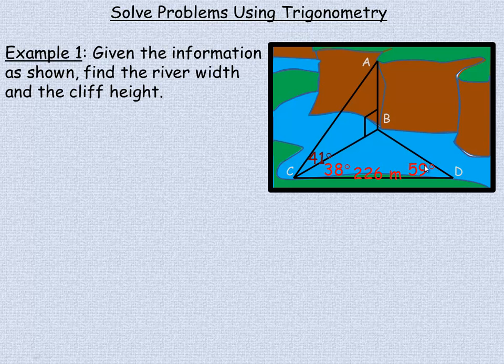They have instruments to measure the angle to a point like B so they know that this is 59 degrees. That would be 38 degrees. And then the angle of elevation to the top of the cliff is 41 degrees. We can use those measurements to determine the distance across the river and how high the cliff is on the other side without actually physically directly measuring them.